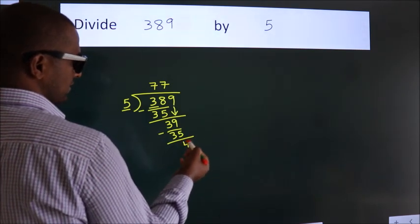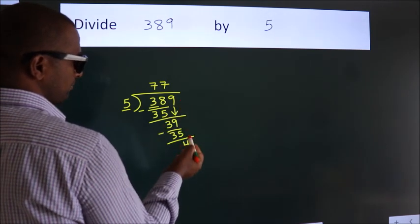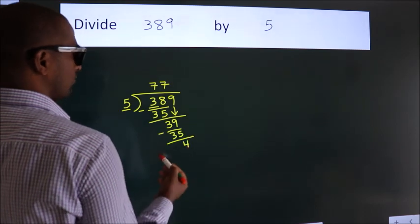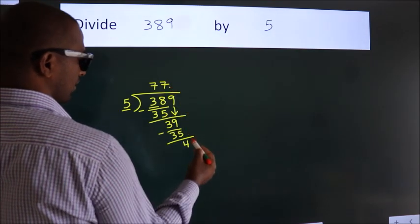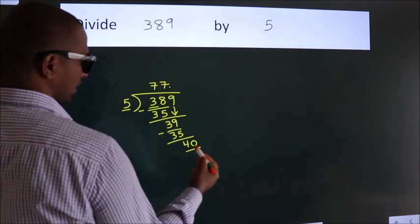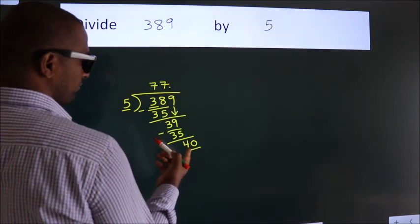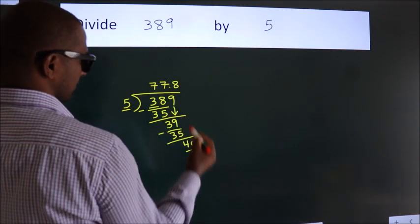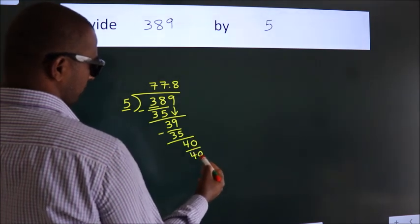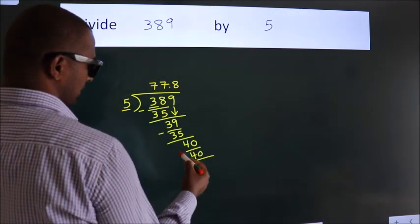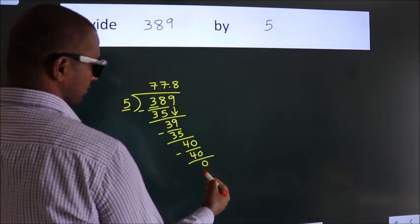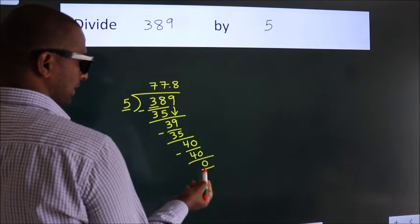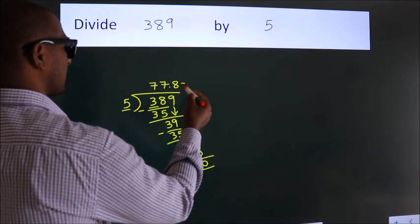After this, no more numbers to bring down. So what we do is put a dot and take 0, giving us 40. When do we get 40 in the 5 table? 5 eights, 40. Now we subtract, we get 0. We got remainder 0, so this is our quotient.